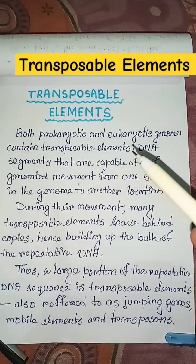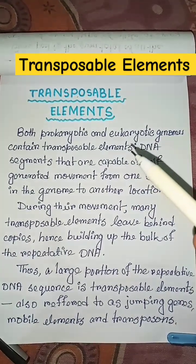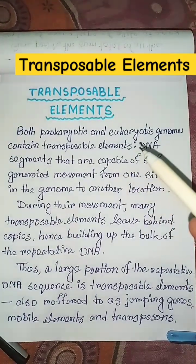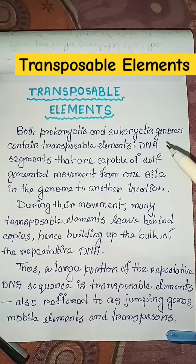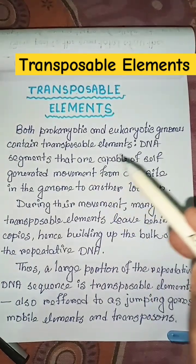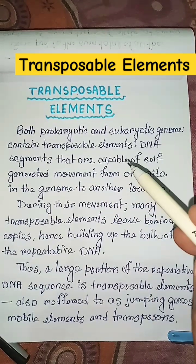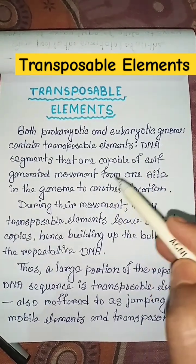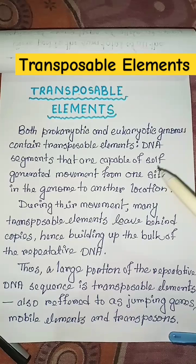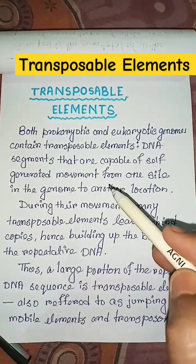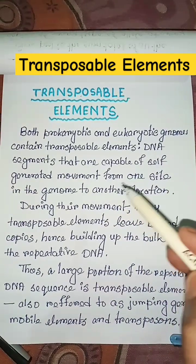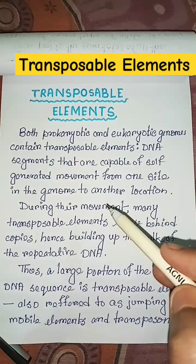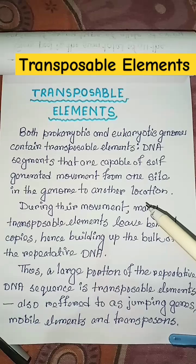What are transposable elements? Both prokaryotic and eukaryotic genomes contain transposable elements, which are DNA segments that are capable of self-generated movement from one site in the genome to another location.